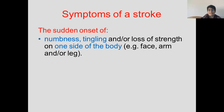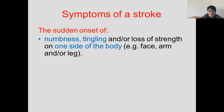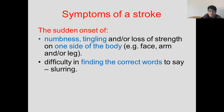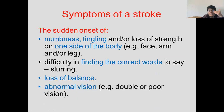Here are the symptoms of a stroke: numbness or tingling on the other side of the body, loss of strength — they can't pick things up — their face droops, or their leg gets all lame. They can't talk properly, loss of balance because one leg isn't working properly, and sometimes they get abnormal vision or double vision, because the side affected determines what symptoms appear.